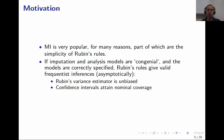One of the characteristics of these rules is that if the imputation and the analysis models are so-called congenial and the models are correctly specified, Rubin's rules will give valid frequentist inferences asymptotically. In particular, Rubin's variance estimator will be asymptotically unbiased and in large samples the confidence intervals will attain their nominal coverage level.